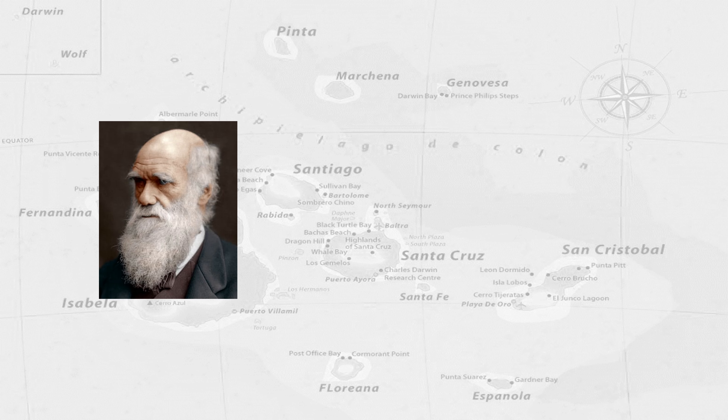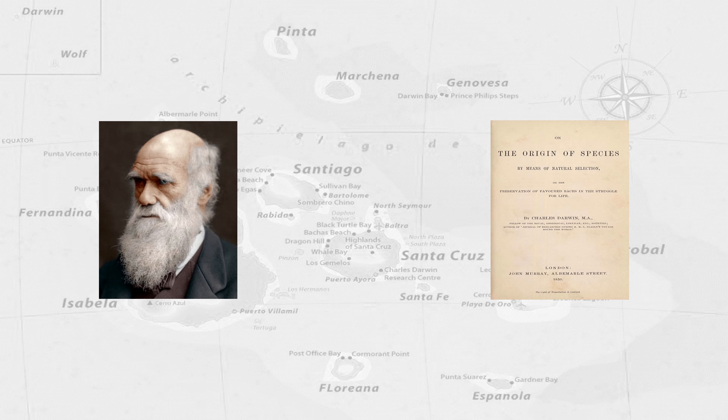His visit is well documented in his book The Voyage of the Beagle, and it is on these islands that many assume his evolutionary theory was first coined, leading him to write The Origin of Species, published in 1859.